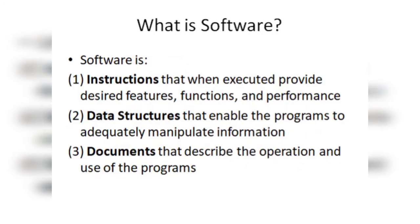To define software in the simplest language, we use three terms: instructions, data structure, and document. Instructions are nothing but simple lines of code जिनको हम execute करते हैं और कोई result मिलता है। Functions, structures, desired features — यह सब मिलाके आपके instructions बनाते हैं। This alone is only part of software.